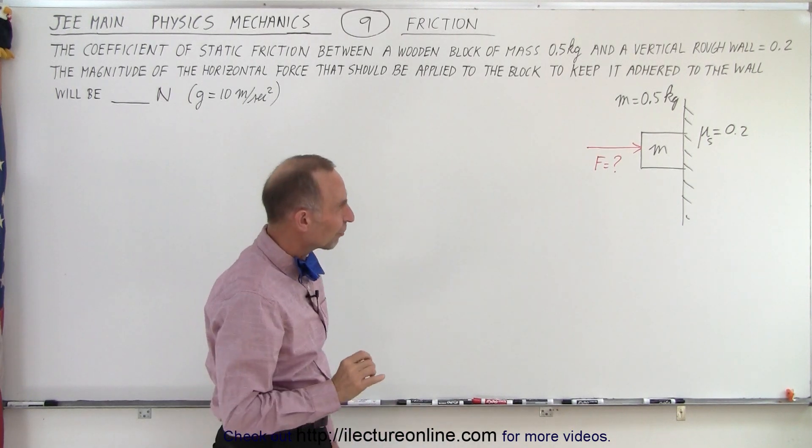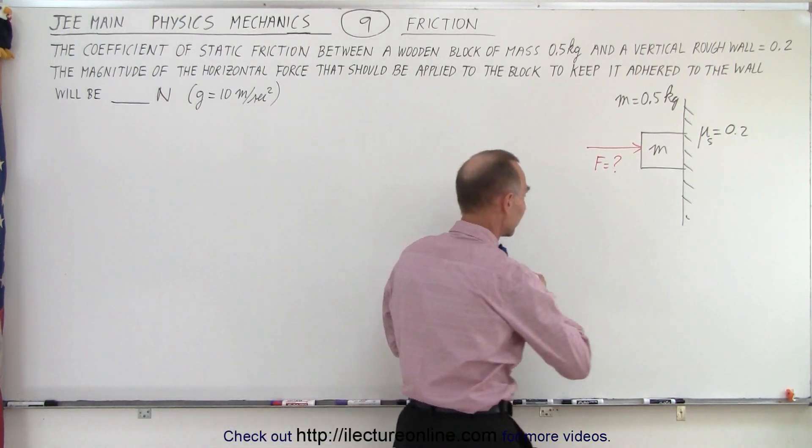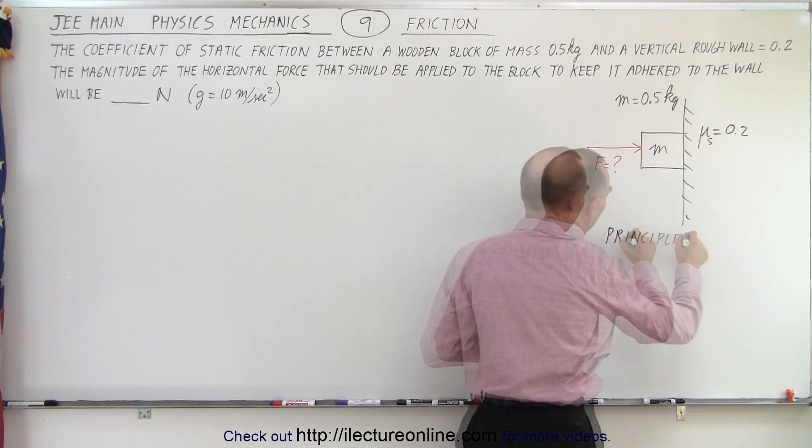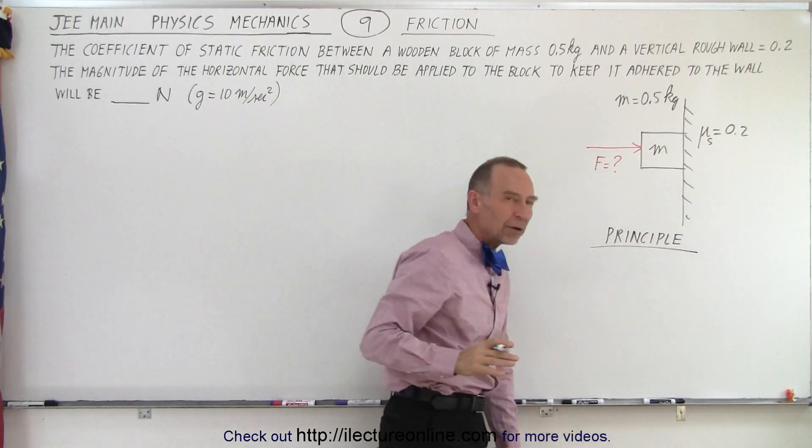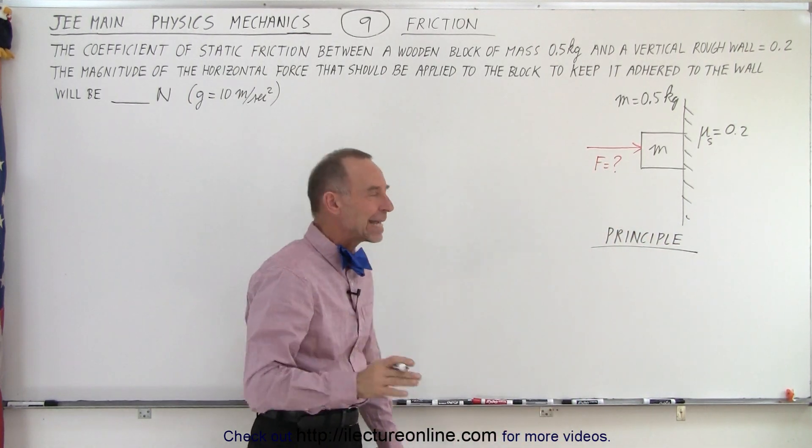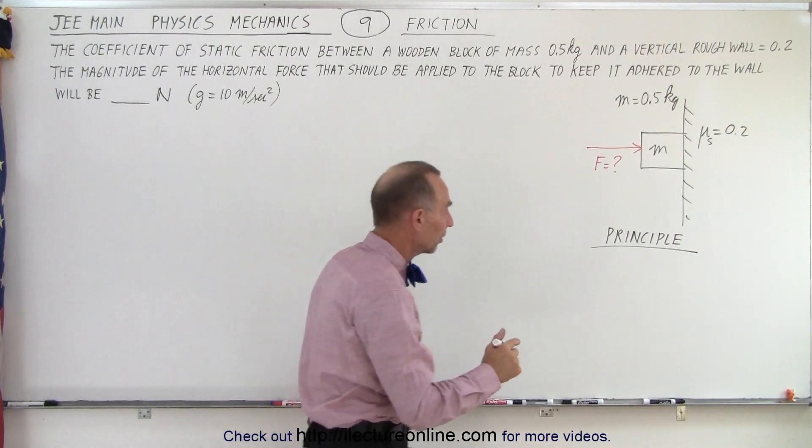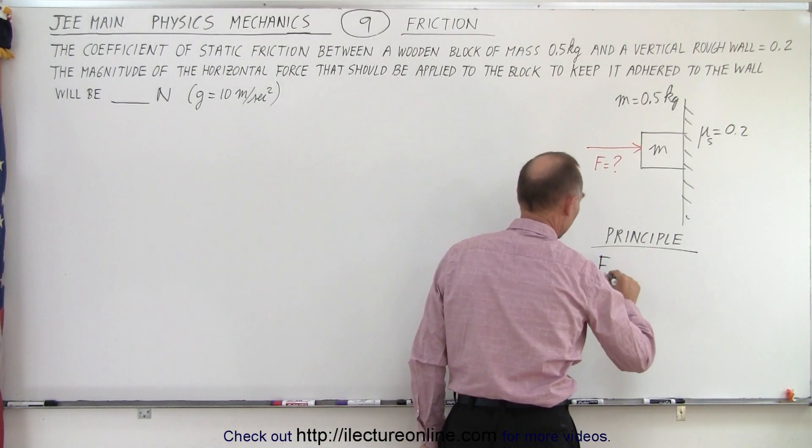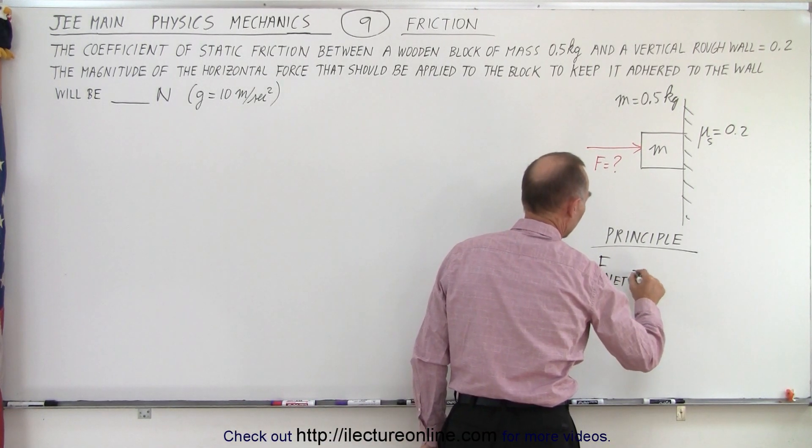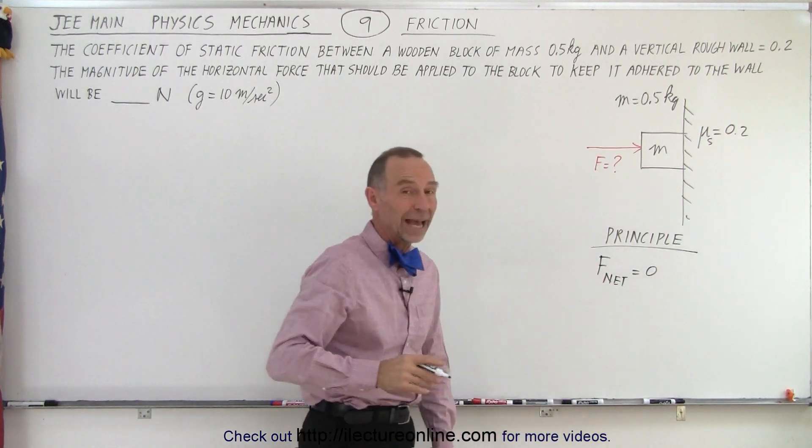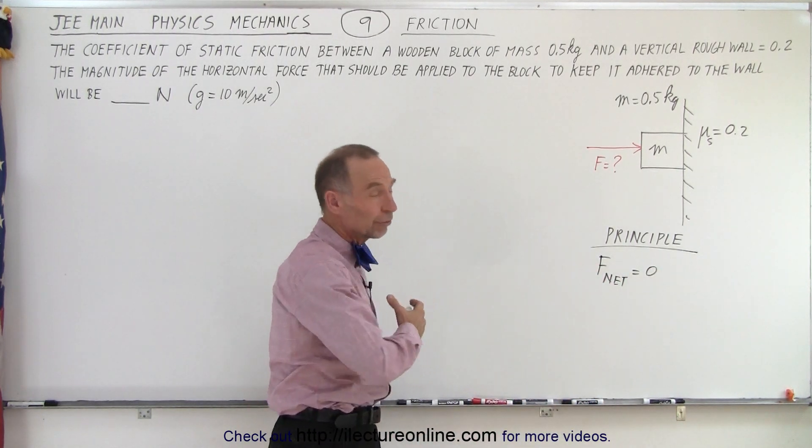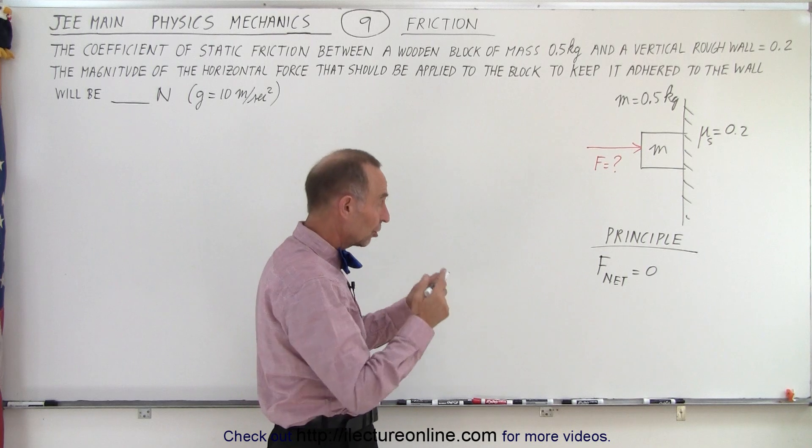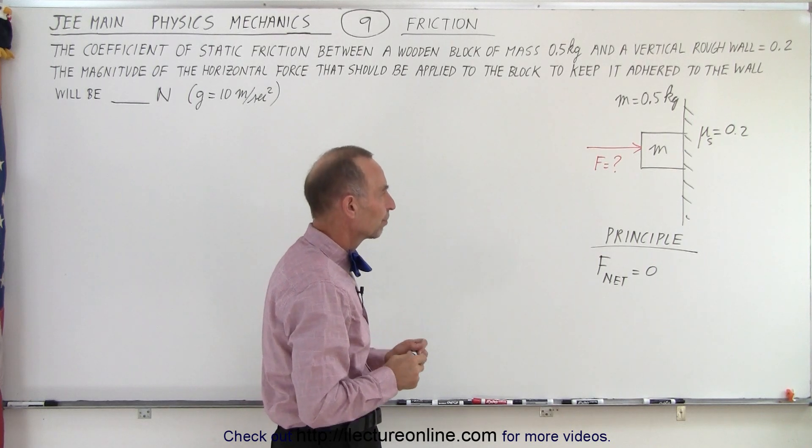So what's the principle involved here? That's important, is understanding the principle. So to keep the block from sliding, there cannot be a net force. So the principle is that F_net is equal to 0. That means we add up all the forces in one direction, all the forces in the other direction, and there should not be any net force.